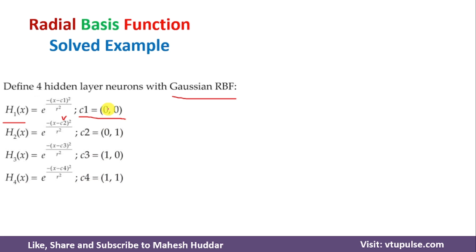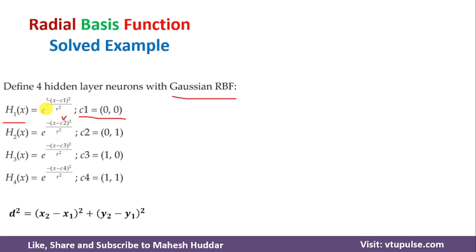Once you define the hidden layer neurons, we need to understand how to calculate the numerator value, that is (x minus c1) squared. This is calculated with the help of the Euclidean distance formula. If we have two data points (x1, y1) and (x2, y2), the distance squared is equal to (x2 minus x1) squared plus (y2 minus y1) squared. The denominator is already given: r equals 1.414, so r squared equals 2.